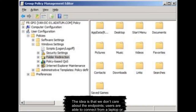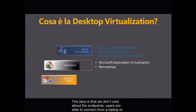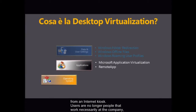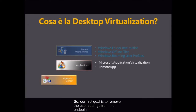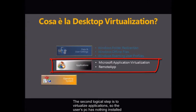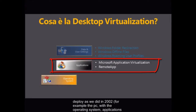The idea is that we don't care about the endpoints. Users are able to connect from a laptop or from an internet kiosk. Users are no longer people that work necessarily at the company, but they need their information and settings to work in an efficient and transparent way. So our first goal is to remove the user settings from the endpoints. The second logical step is to virtualize applications so the user's PC has nothing installed locally. That's why, in 2012, the user's work area is not something we'll deploy as we did in 2002 — the PC with the operating system, applications, and data all on the local hard disk.